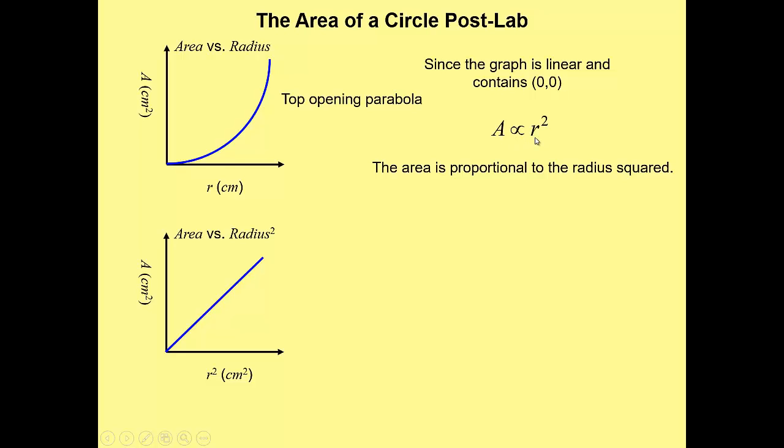Quadruple the radius, you'll get 4 squared, 16 times the area. That's what it means to have area proportional to radius squared. You cut the radius in half, you get 1 half squared, only 1 quarter of the area. Fun with fractions.